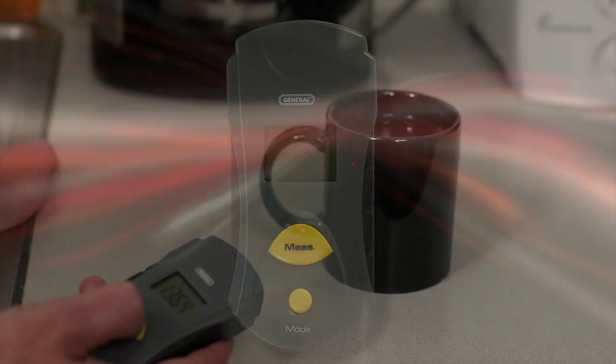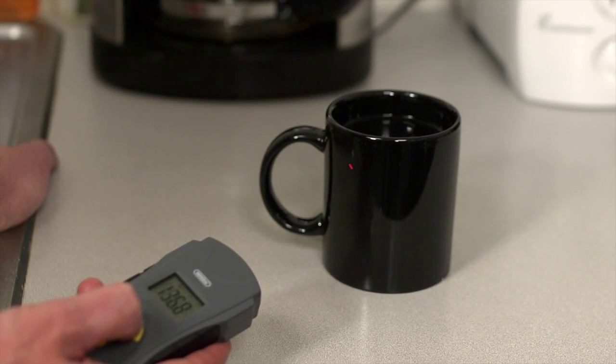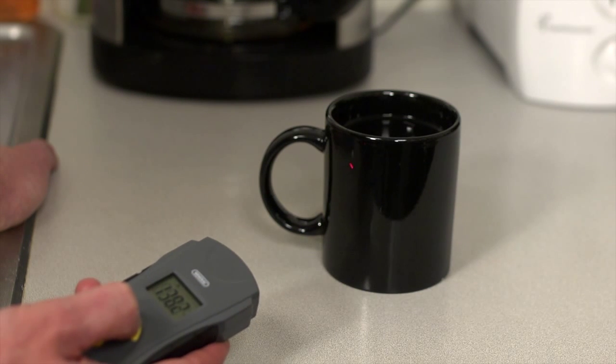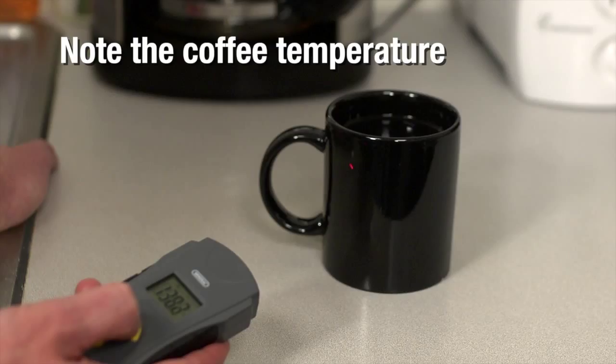First, the basics. As a demonstration, use a hot cup of coffee and a freezer. Point the unit at the cup. Press and hold the measurement button. Focus your laser and be precise with your target area. Note the coffee and freezer temperatures.